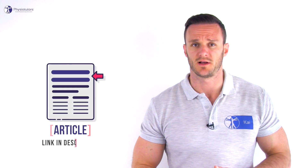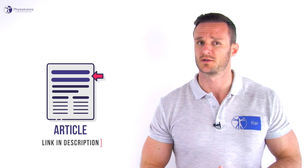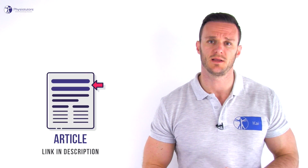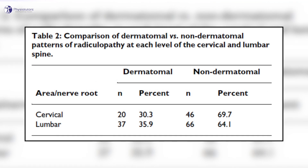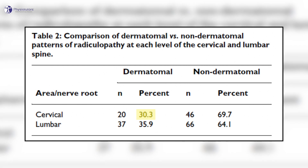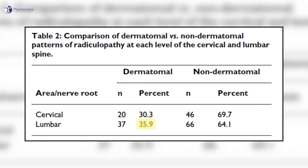If radicular pain or radiculopathy or both are present, we are talking about radicular syndrome, which is an umbrella term. Now let's see if radicular pain follows a dermatomal pattern. A study by Murphy et al. in the year 2009 observed pain patterns in patients with radicular pain and found the following: radicular pain in the cervical spine followed a dermatomal distribution in only 30 percent of cases, while in the lumbar spine it was slightly better with 36 percent.